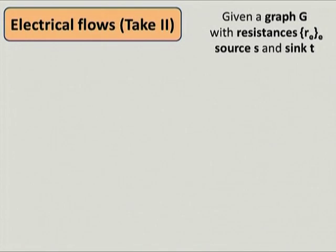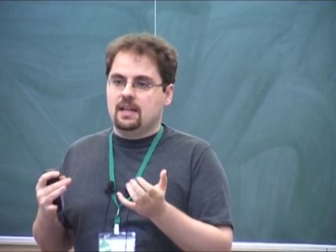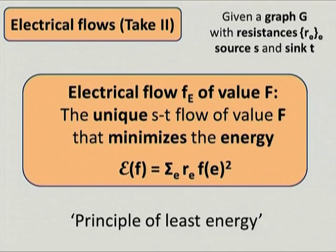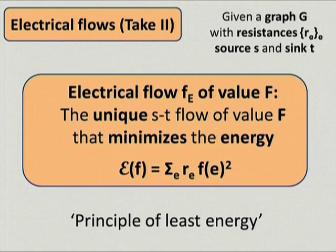The equivalent definition we use in this work is slightly different. Given a graph G with resistances R_e, source S, and sink T, the electrical flow of value F is the solution to the following optimization problem: optimize over all ST flows of value F and choose the one with minimum energy, where energy is the sum over all edges of R_e times the flow squared—the heat dissipation formula from physics. The electrical flow is the unique solution to this energy minimization problem, which is reminiscent of the principle of least energy in physics. One can show this is equivalent to the physics definition via Ohm's law and Kirchhoff's laws.